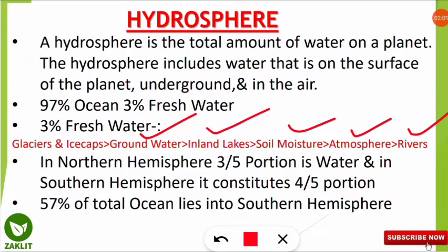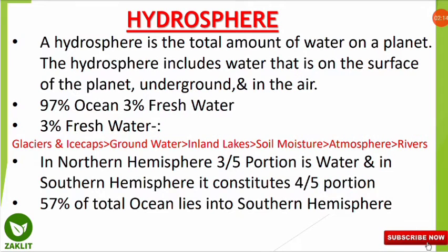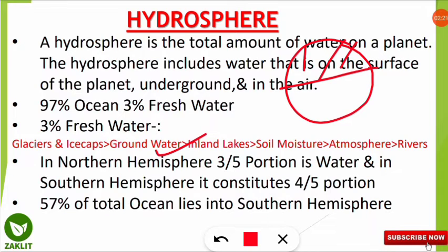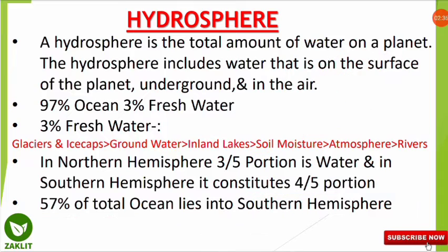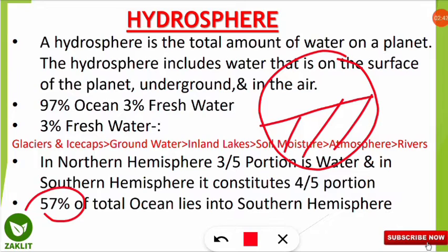We know from school that three-fourths of the total earth surface is covered with water. But importantly, in the northern hemisphere, 3/5th of the portion is water, whereas the southern hemisphere constitutes 4/5th as water. Also, 57% of the total ocean lies in the southern hemisphere — oceans are present in both hemispheres, but the maximum percentage is in the southern hemisphere.